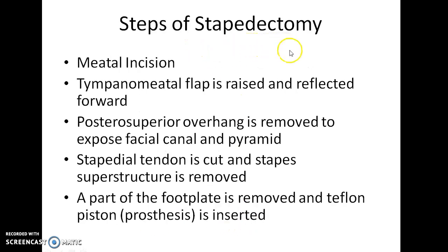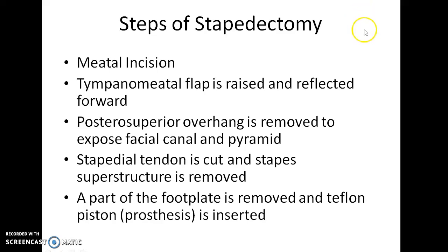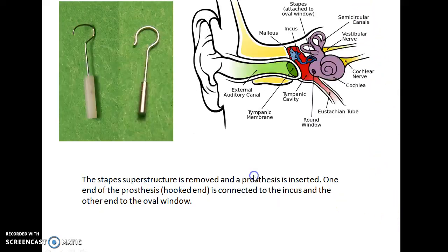What are the steps of stapedotomy? A meatal incision is made. A tympanomeatal flap is raised and reflected forward. A posterosuperior overhang is removed to expose the facial canal and pyramid. The stapedial tendon is cut and the stapes superstructure is removed. In stapedectomy, a part of the footplate is removed and a Teflon piston prosthesis is inserted. In stapedotomy, a hole is made in the footplate and the Teflon piston prosthesis is inserted. All other steps remain the same. To simplify: the stapes superstructure is removed and a prosthesis is inserted.